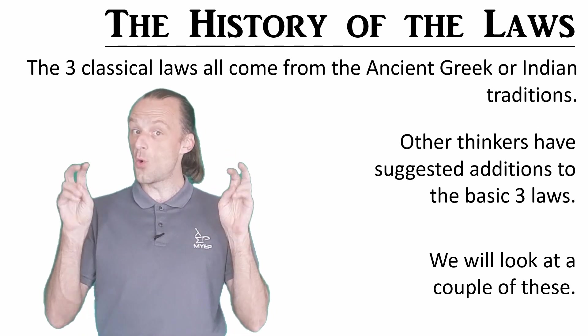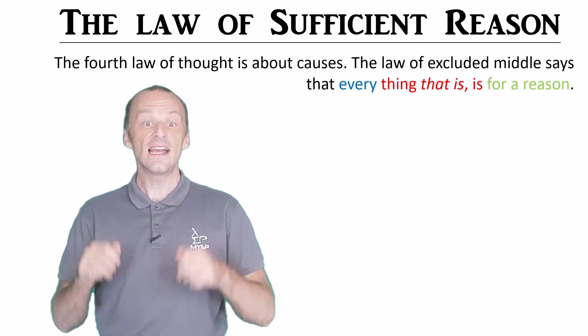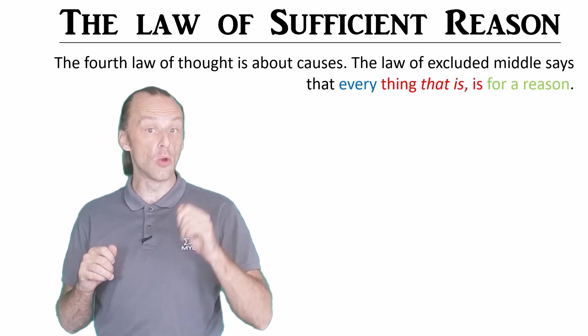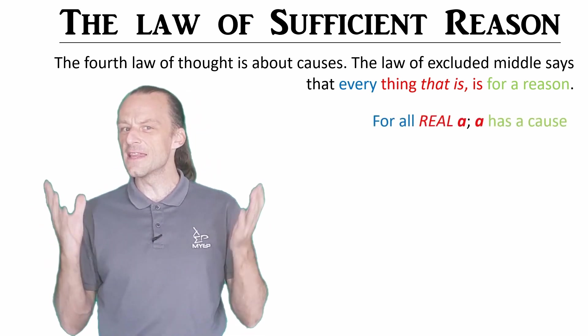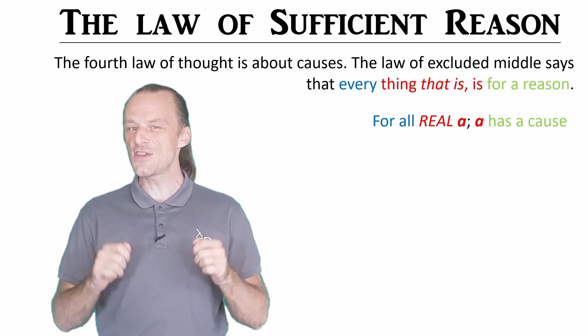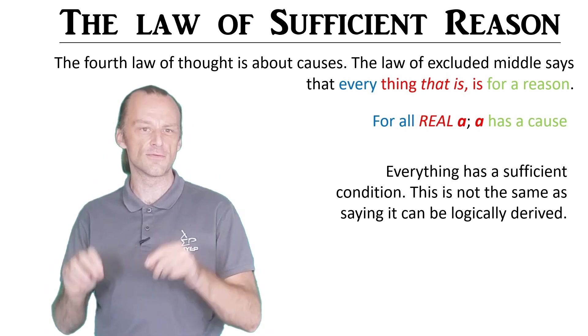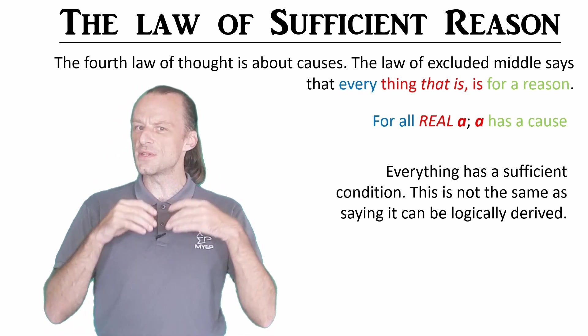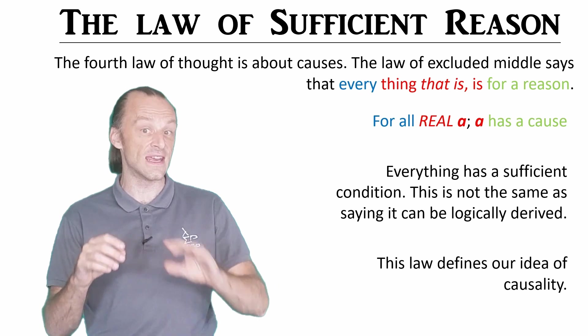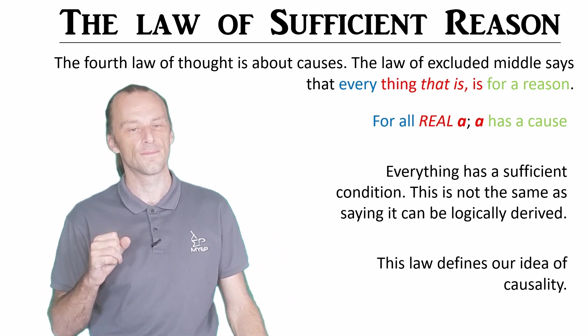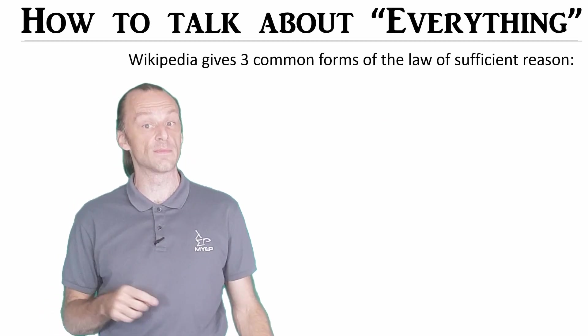The suggested fourth law of thought is the principle of sufficient reason. It says that everything that is is for a reason, or for all real a, a has a cause. We're basically saying that if a thing is real, there is a sufficient condition for it being real, and this is not the same as saying it can be logically derived. This law is what describes the idea of cause and effect, the idea that things make other things happen in a line of consequences.